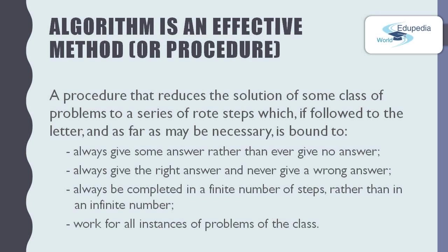From the previous episode we talked about optimizing algorithms — making effective methods or procedures. A procedure that produces the solution of some class of problems through a series of broad steps which, if followed, is bound to always give some answer rather than ever give no answer, always give the right answer and never give a wrong answer, and always be completed in a finite number of steps. It should work for all instances of problems of the class.